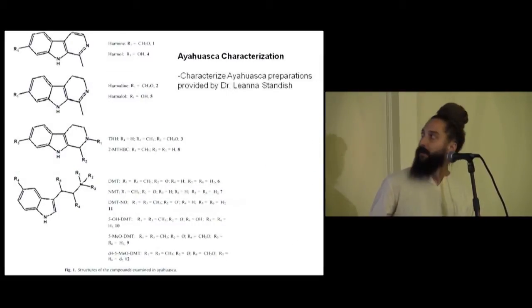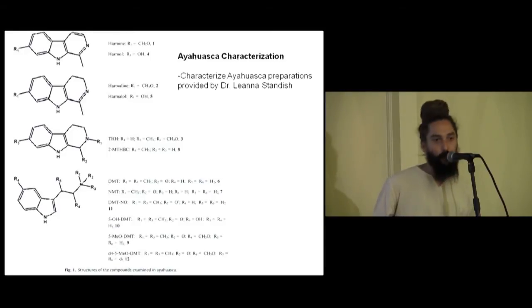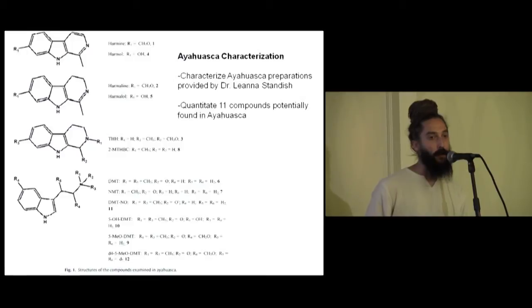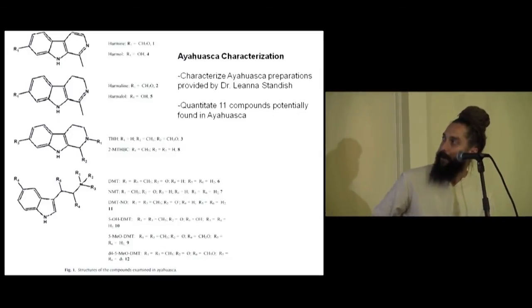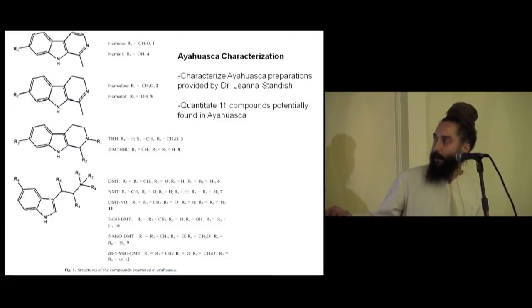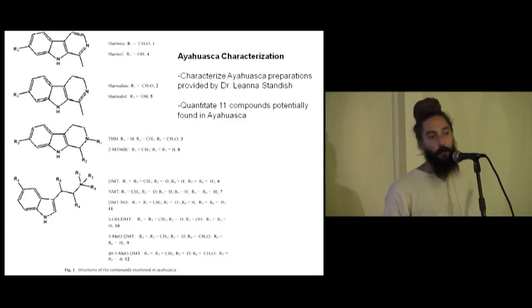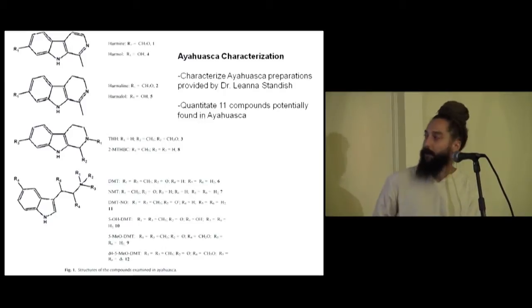So, the first thing we did was a collaboration with Dr. Leanna Standish. She created a number of different ayahuasca brews and sent them to us. And we set up a complicated analytical chemistry system to quantify some different compounds in it: the harmalols, harmine, and its O-demethylated metabolite, harmol, harmaline, and also tetrahydroharmine, and 2-methyltetrahydro-beta-carboline. These are all harmines that function as MAOIs and are found in the ayahuasca vine itself, Banisteriopsis caapi.